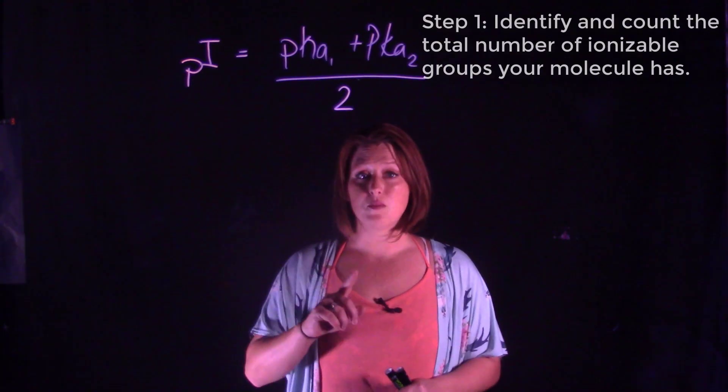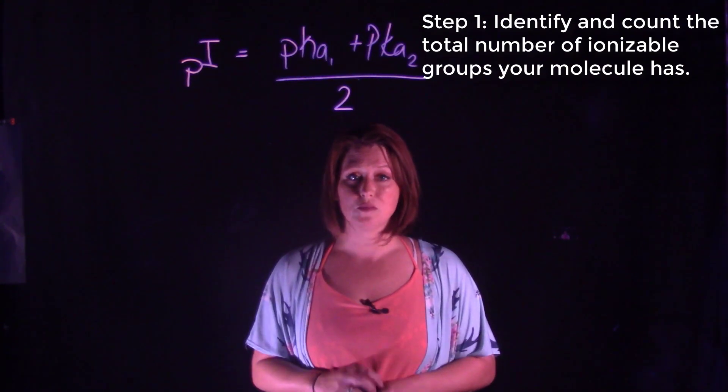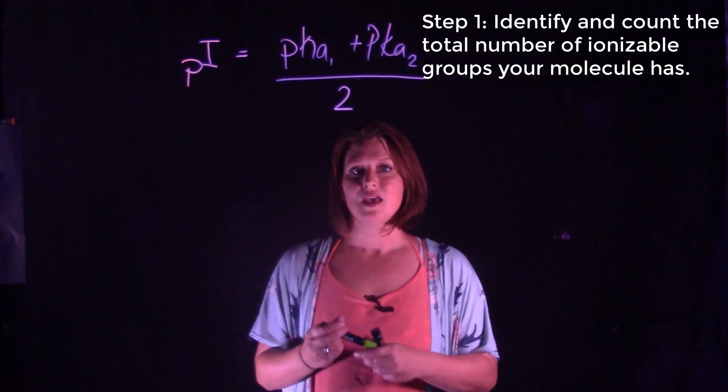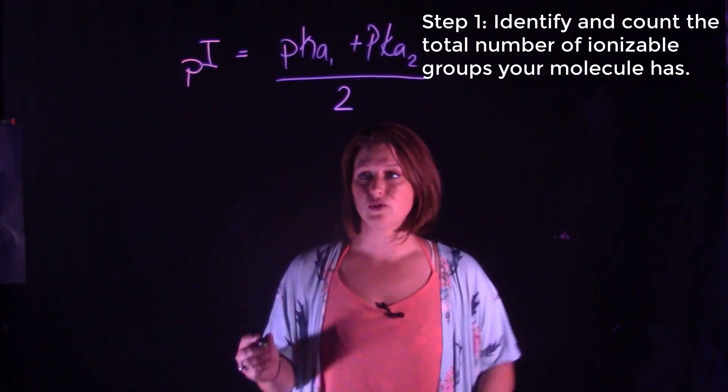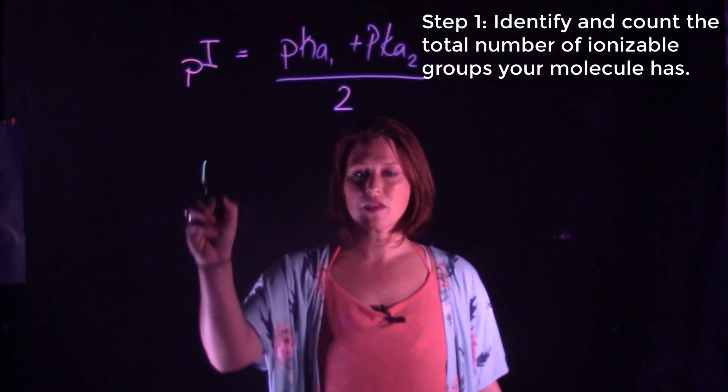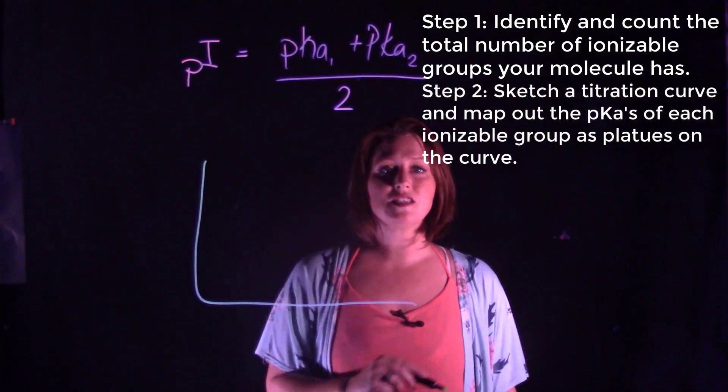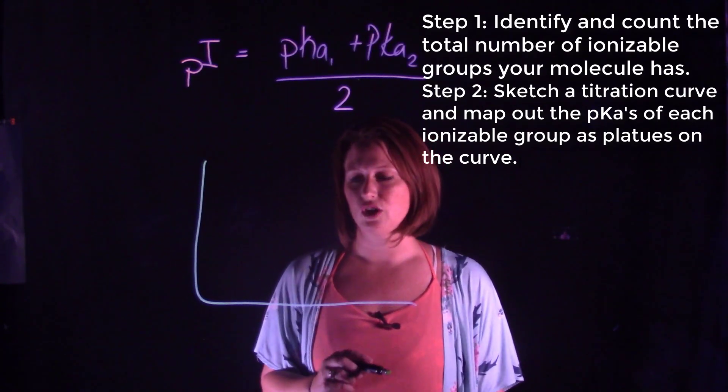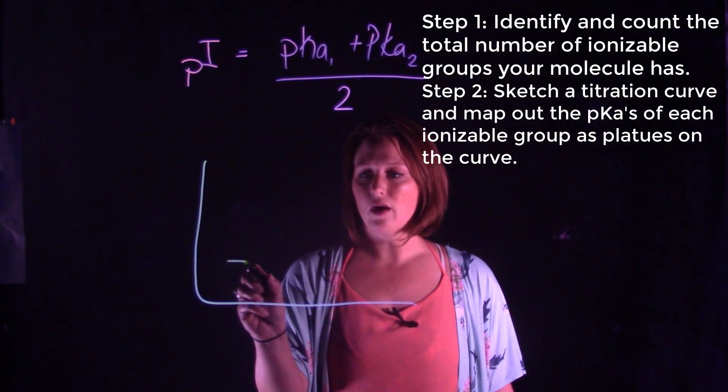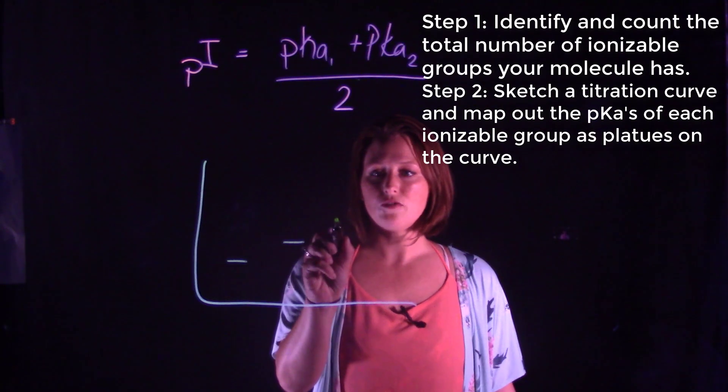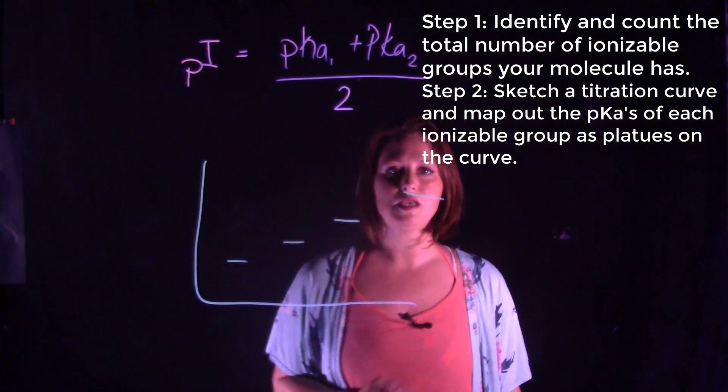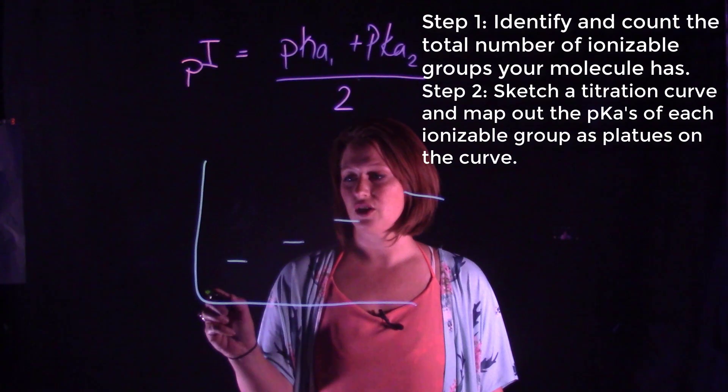I can break this down into four easy steps for you. Step one: determine how many ionizable groups you have in your molecule. Step two: sketch out a rough titration curve and plot each pKa from lowest pH to highest pH as plateaus on your titration curve.